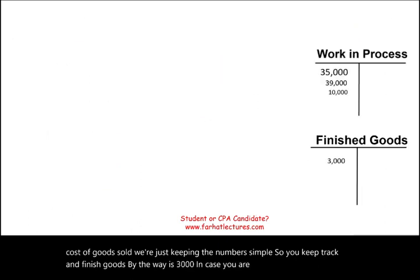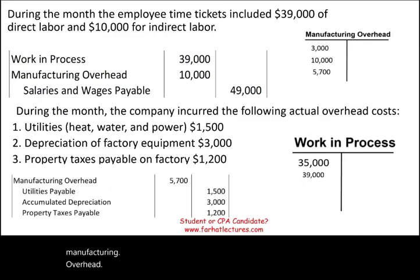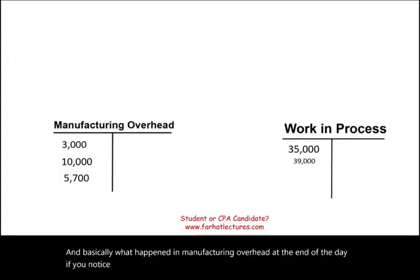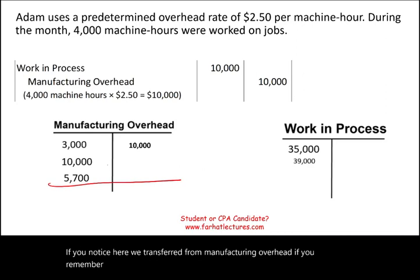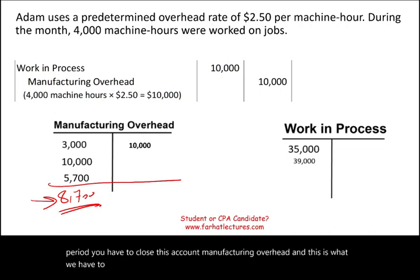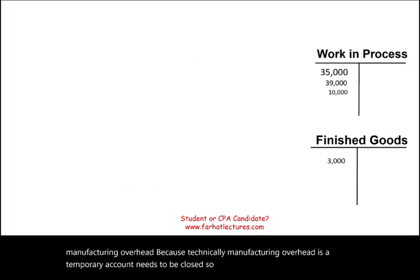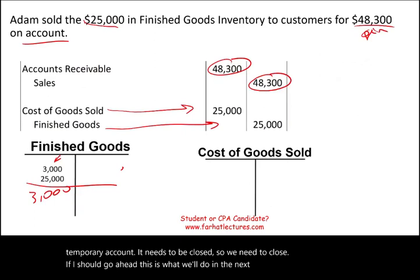Looking back at manufacturing overhead, we transferred $10,000 out, meaning we still have a debit balance of $8,000 sitting in manufacturing overhead. It cannot sit there — at the end of the period, you have to close this account. Manufacturing overhead is a temporary account and needs to be closed. We will cover how to close manufacturing overhead in the next recording.